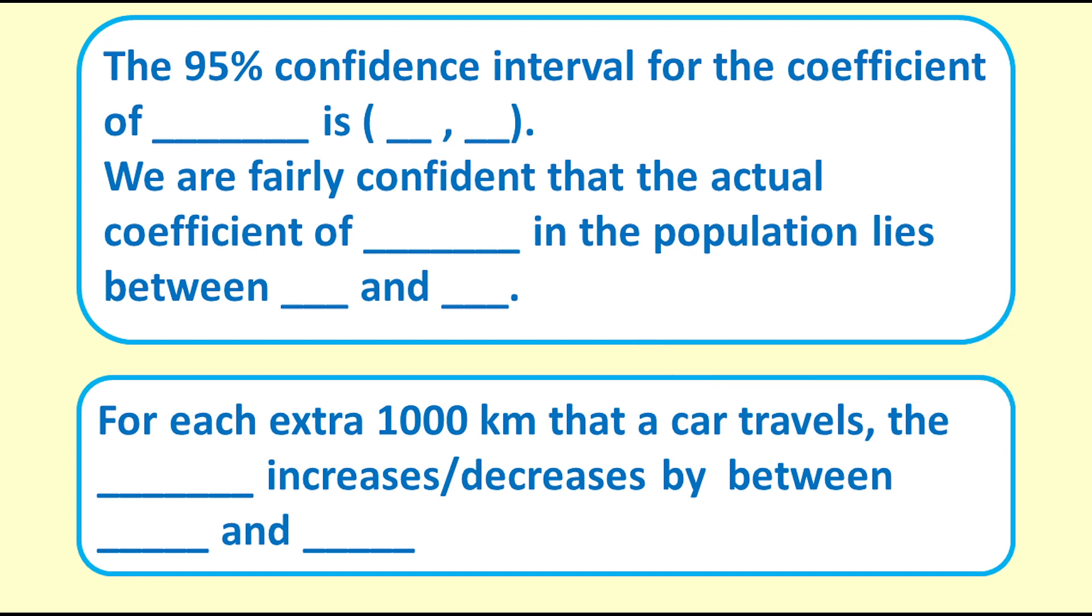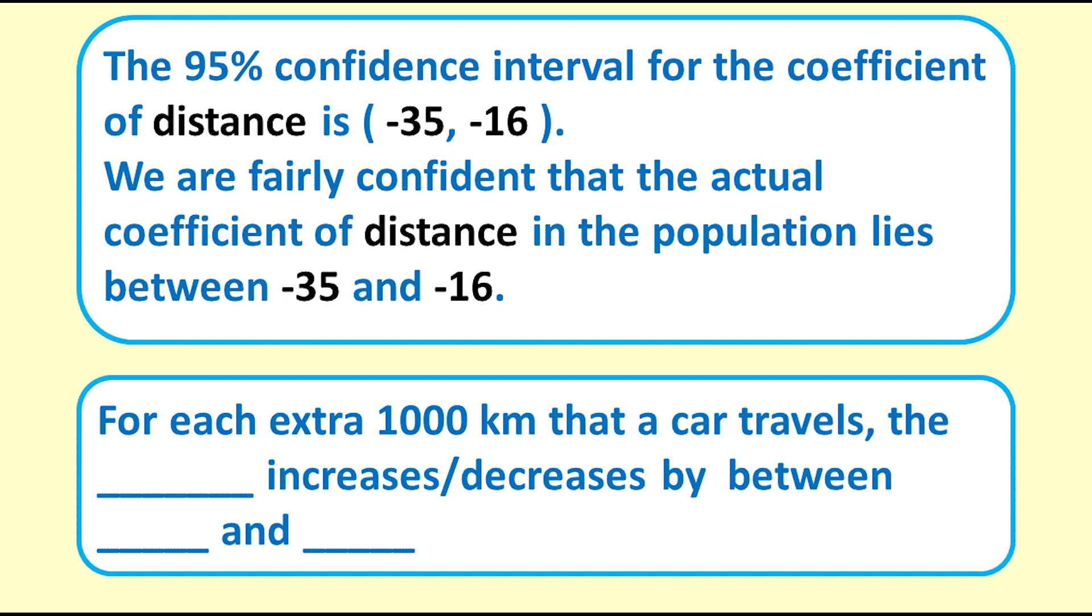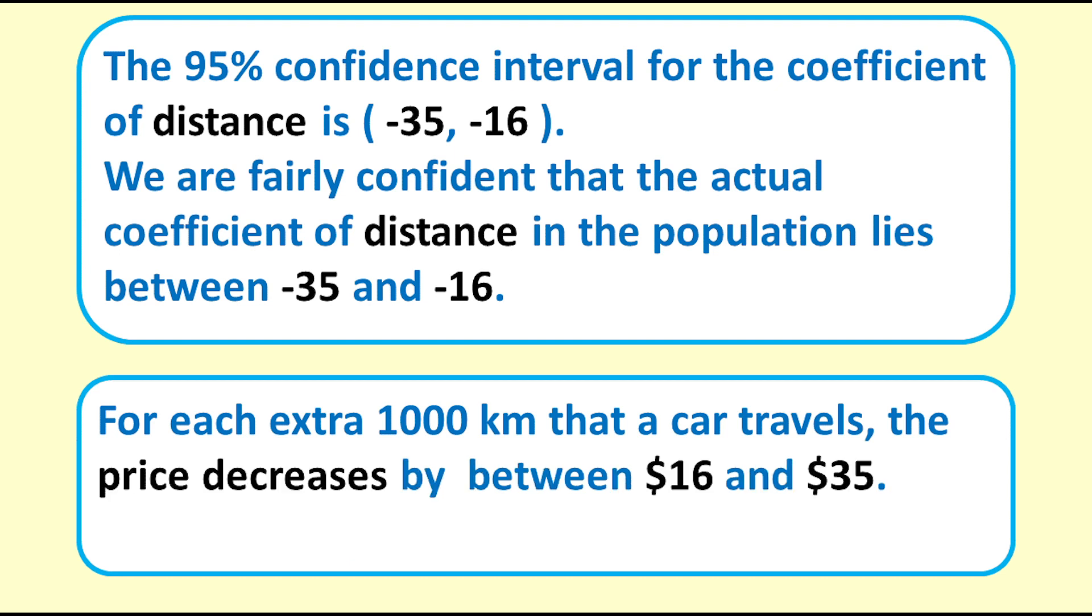The 95% confidence interval for the coefficient of distance is negative 35 to negative 16. We are fairly confident that the actual coefficient for distance in the population lies between negative 35 and negative 16. For each extra 1000km that the car travels, the price decreases by between $16 and $35.